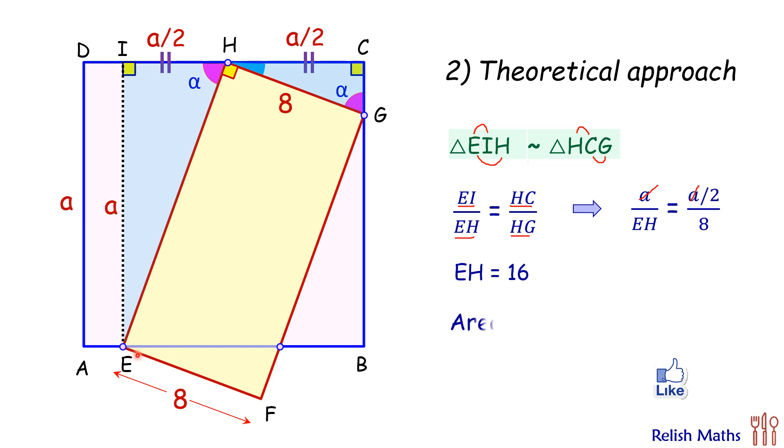length times breadth, or 8 times 16, that is 128 centimeters squared. And that's our answer. I hope you enjoyed both the solutions. I will see you in the next video. Till then, tata, bye bye.